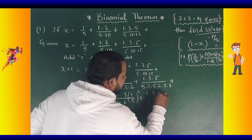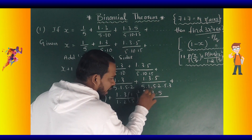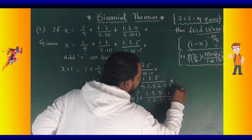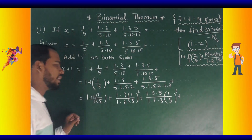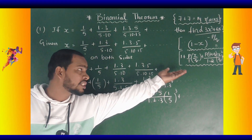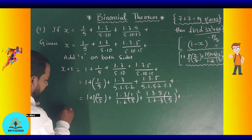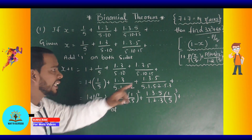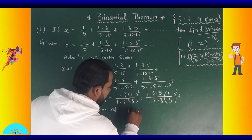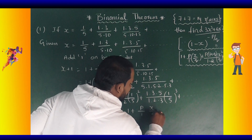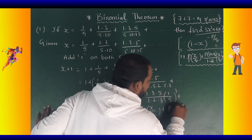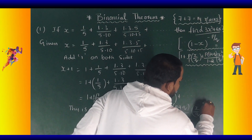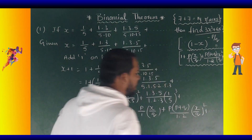Next, the numerator terms: 1 by 5 whole square, 1 by 5 whole cube, plus up to so on. This is the form of 1 plus p by 1 times x by q plus p into p plus q by 1 into 2 times x by q whole square plus up to so on.